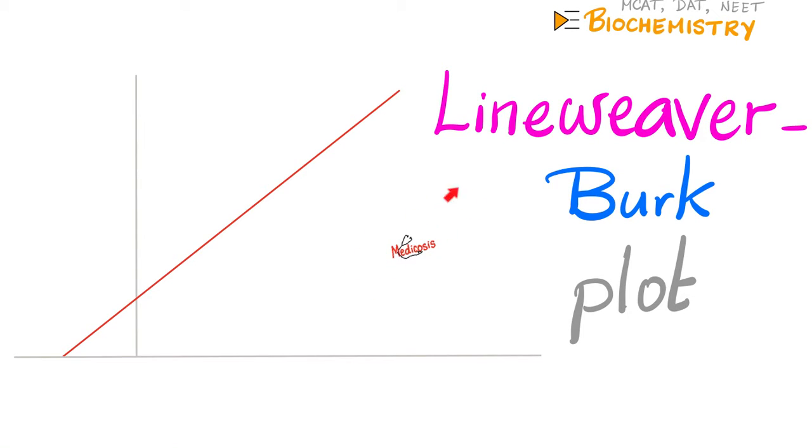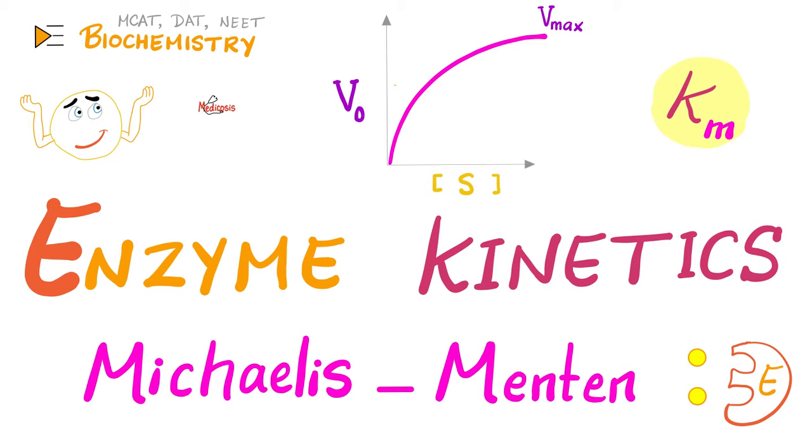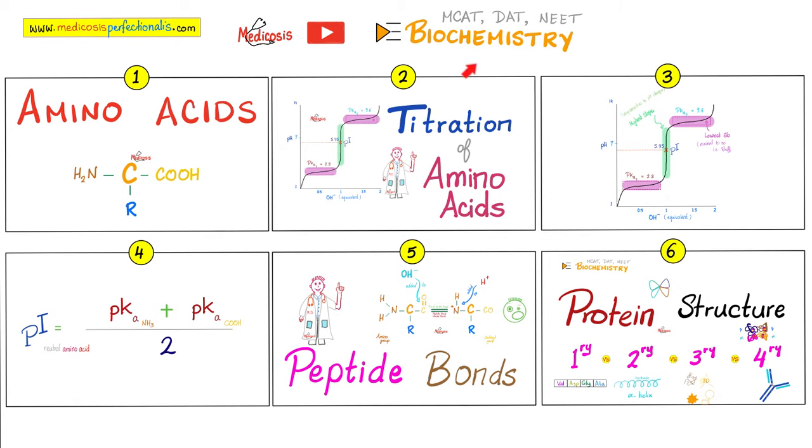Hey guys, it's Medicosis Perfectionitis where medicine makes perfect sense. Let's resume our biochemistry playlist. In the previous video, we talked about Michaelis-Menten graphs. Today, it's time for a similar one: Lineweaver-Burke plot. It's also known as the double reciprocal plot because everything is upside down. With that said, now let's get started. Please watch my previous video on Michaelis-Menten before this one because they are connected.